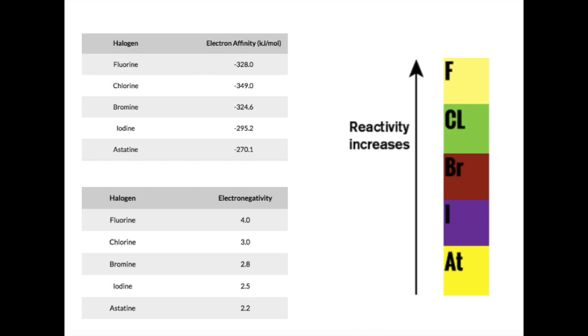Electronegativity is a periodic trend where it decreases down the group, as illustrated in the lower table. The reason the numbers of valence electrons increase is because of the increase in energy levels at gradually lower levels.